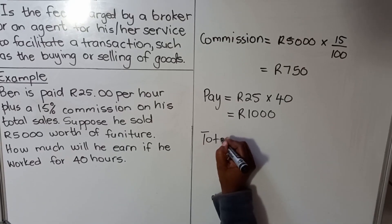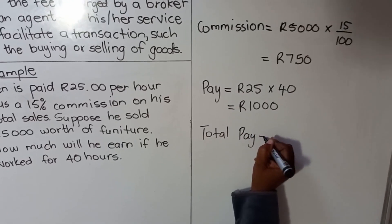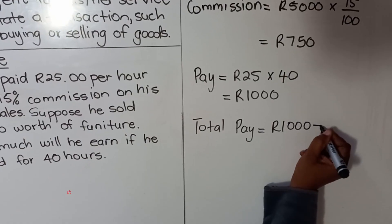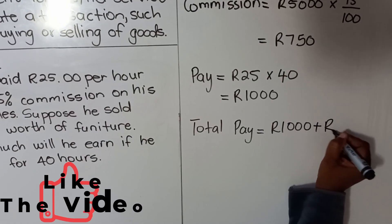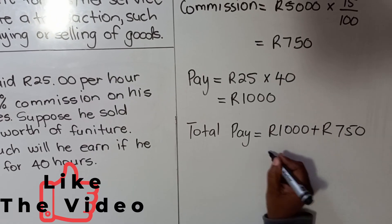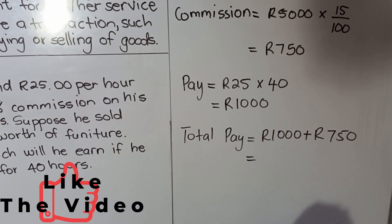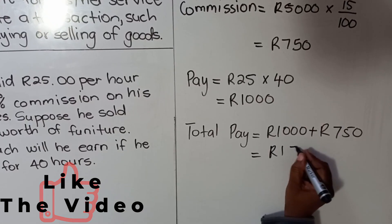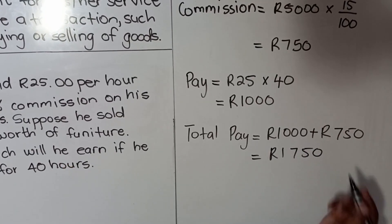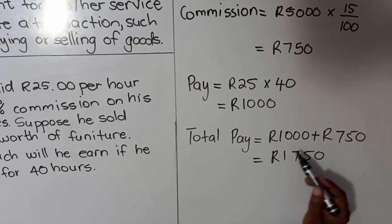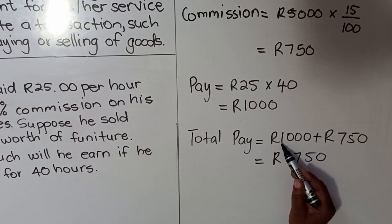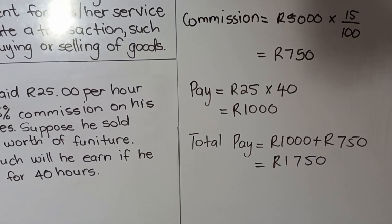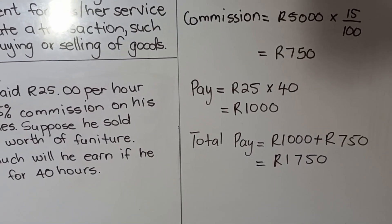The total pay will be the 1,000 from the hours plus the 750 from the commission. So his total salary will be 1,750, combining the salary from hours and the commission.